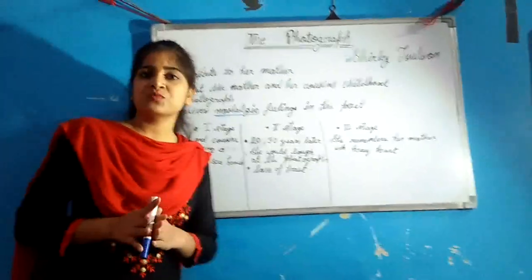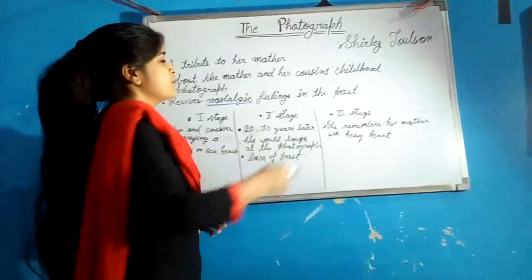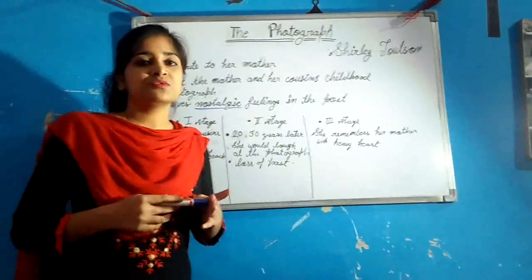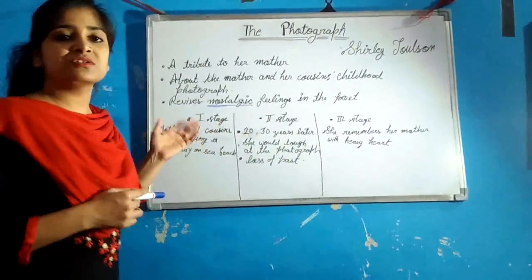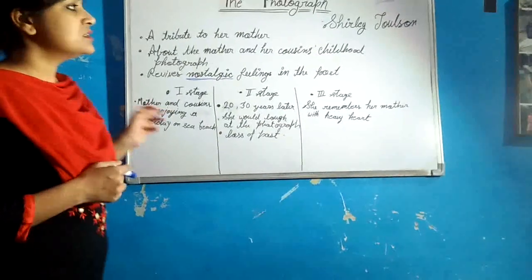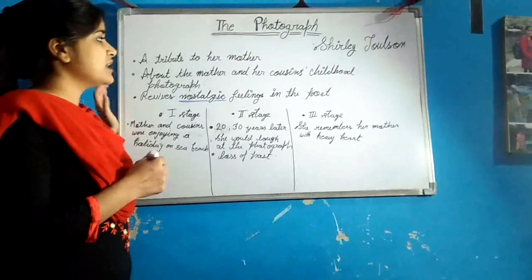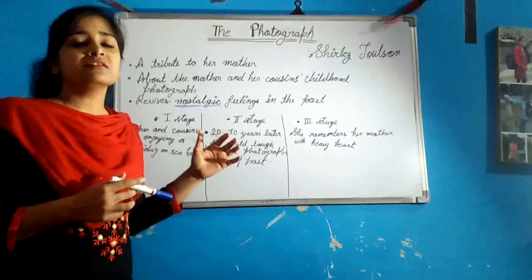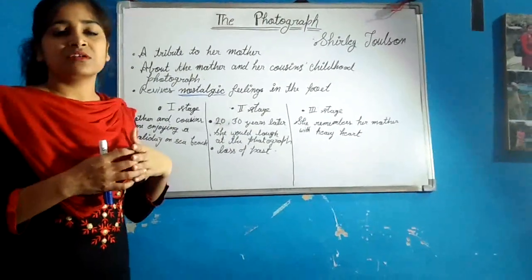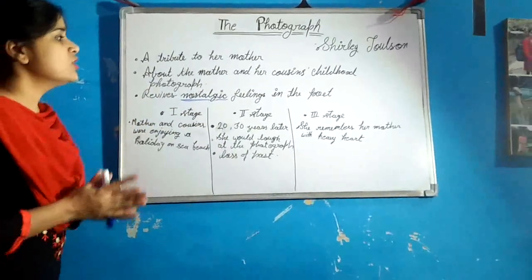Today we are going to discuss the first poem of Hornbill which is 'The Photograph' composed by Shirley Tolson. This poem is actually a tribute of the poet to her mother who is no more. This poem is about the mother and her cousin's childhood photograph, and by looking at that photograph the poet started feeling sad and recalling her mother's memories. That is why this poem revives nostalgic feeling.